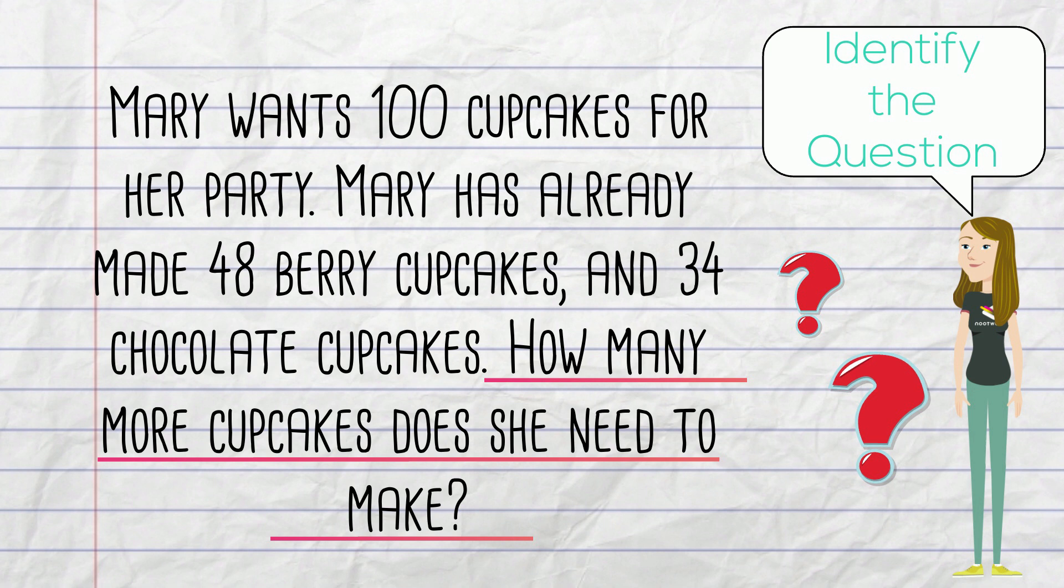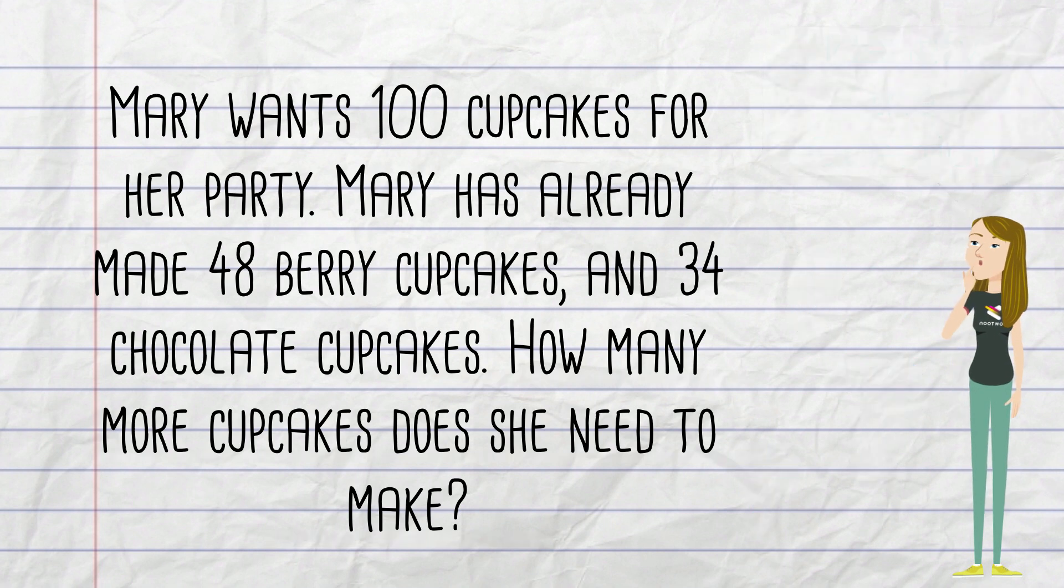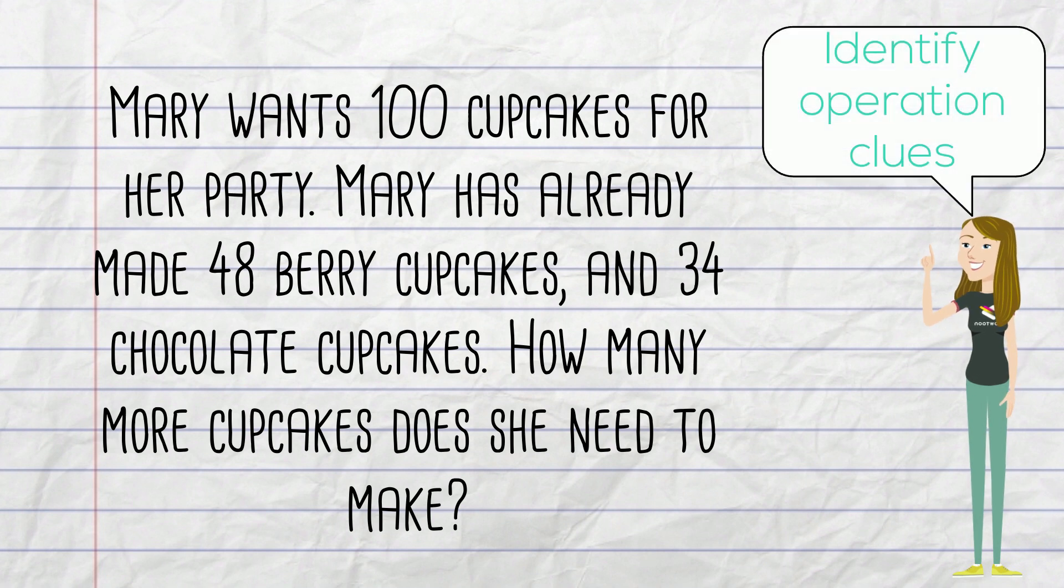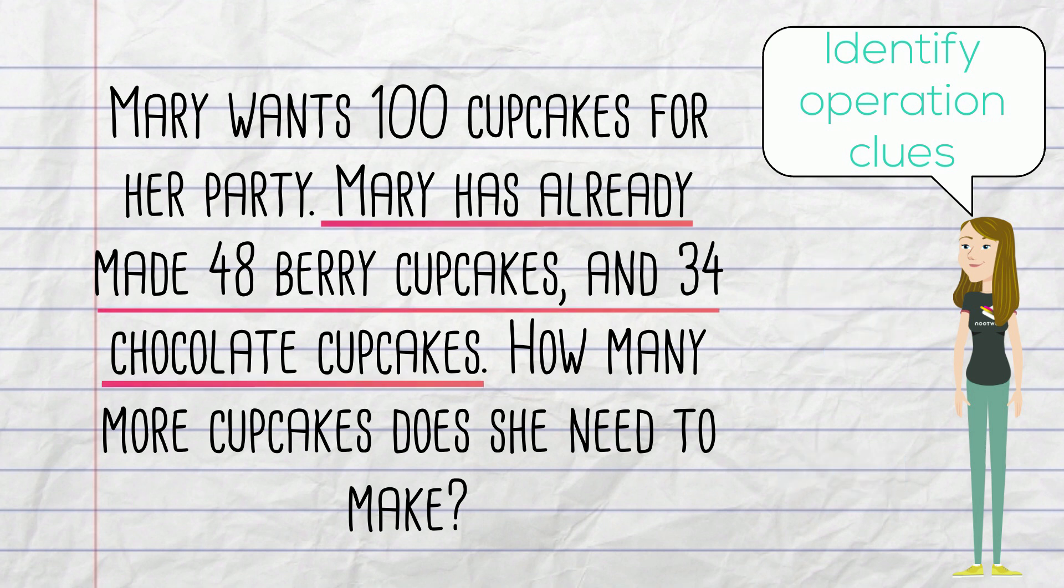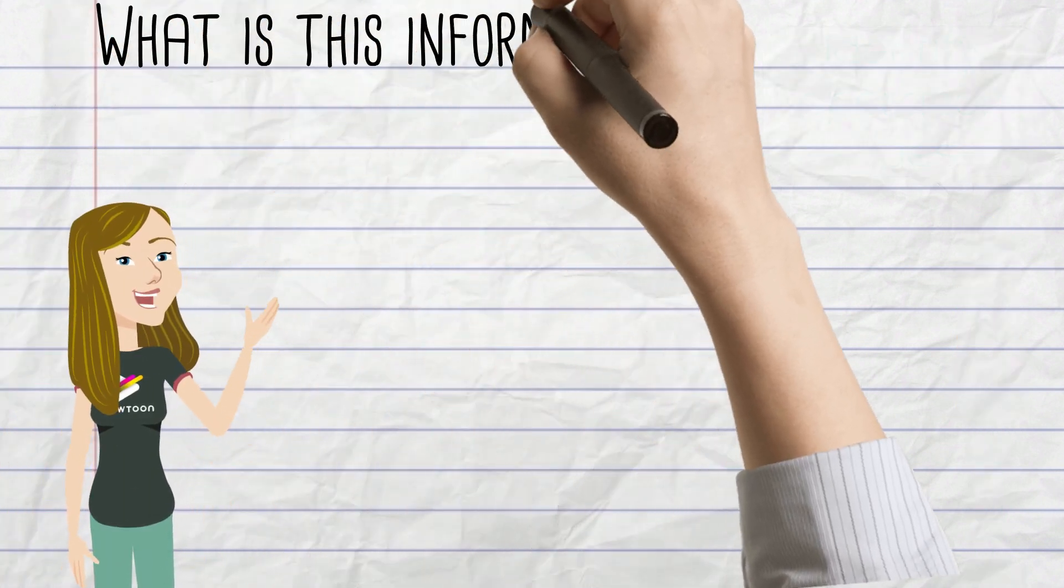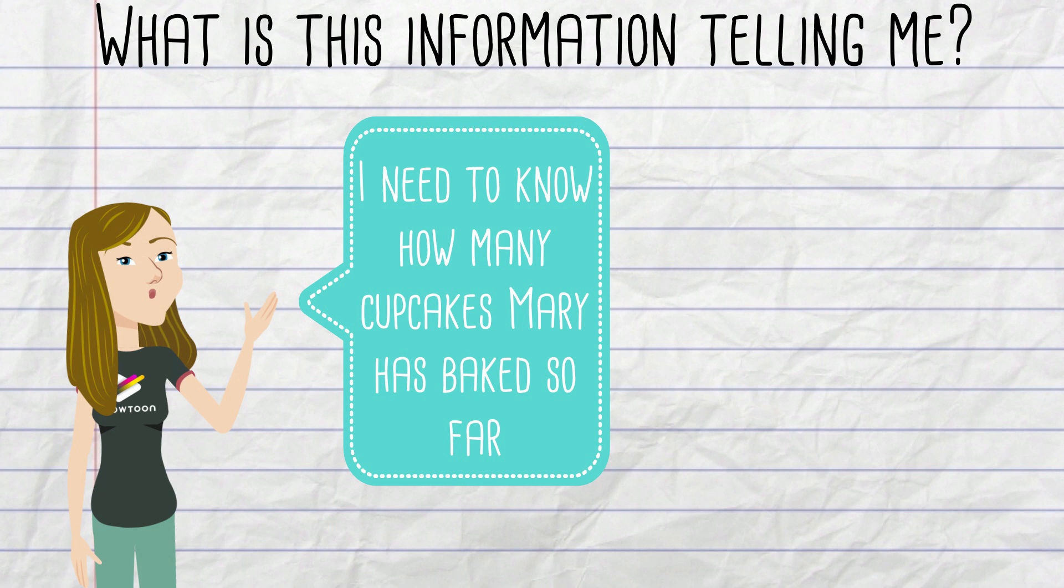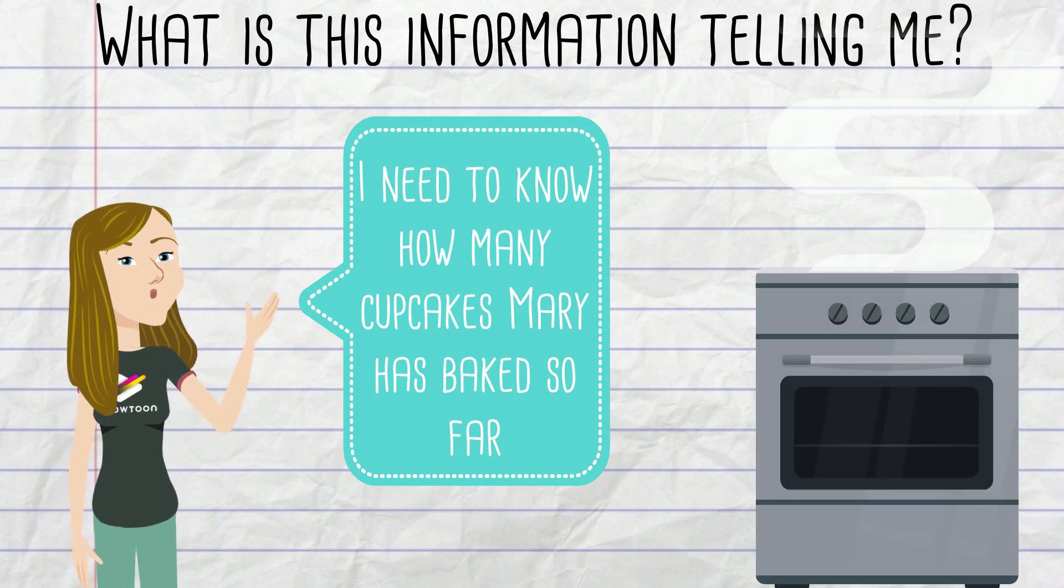When solving problems that require more than one step, it is important to identify any operation clues. Meaning, which words show whether we need to add or subtract. In the problem, I see that it says Mary has already made 48 berry cupcakes and 34 chocolate cupcakes. What is this information telling me? Oh, that's right. I need to know how many cupcakes Mary has baked so far.